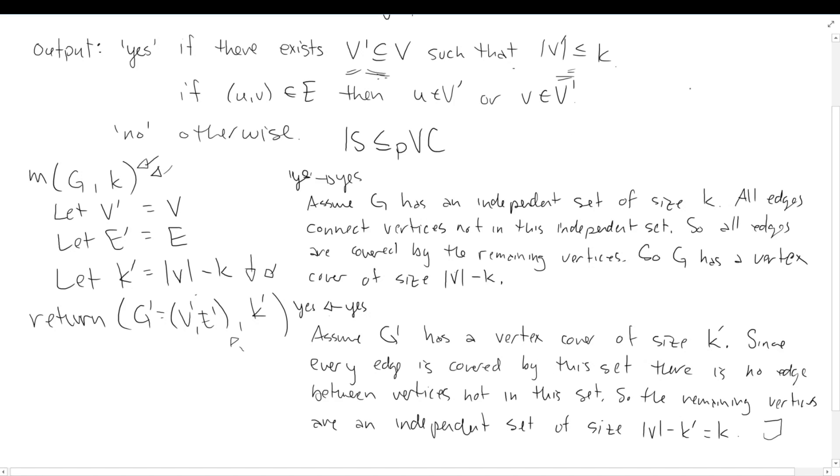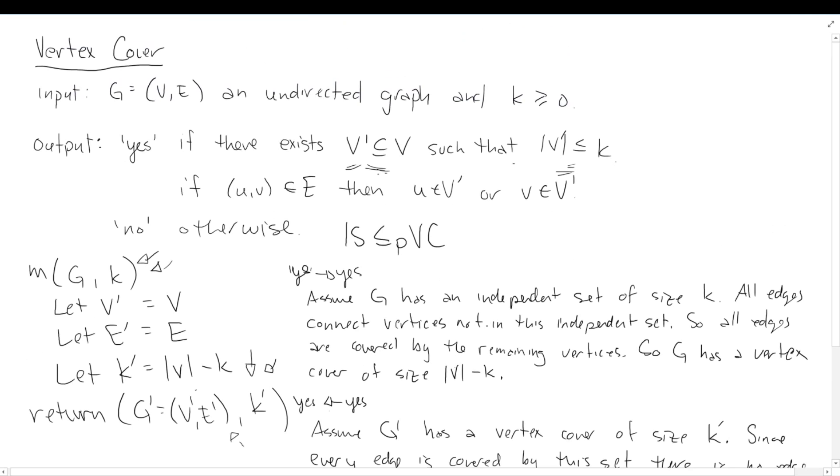So we've actually shown this reduction is correct. And I guess the only thing we haven't commented in both our NP proof and in our reduction here is on the amount of time it takes. This should be fairly straightforward. There's only a constant amount of time to do the reduction here. So sure enough, we've shown a polynomial time reduction between these two. So our problem here, vertex cover, at least if we believe independent set is NP-complete, then we should believe that vertex cover is NP-complete as well.